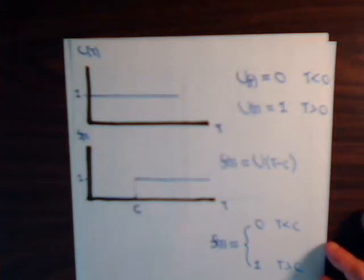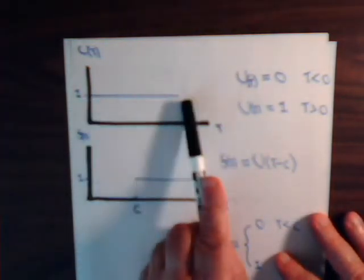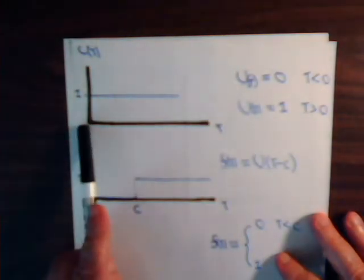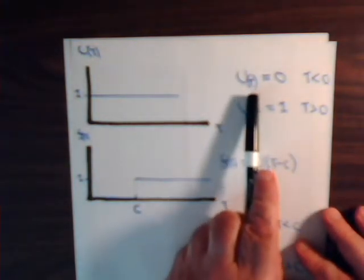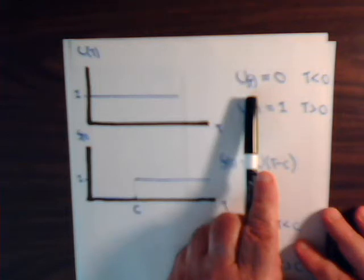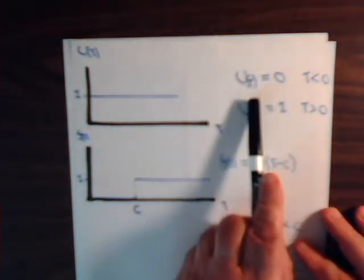So the graph of u of t would be real simple. Once we're past zero, it's equal to one. Before zero, then it's zero. So again, whatever inside of these parentheses here, if it's negative, then this is going to be a zero quantity. If whatever inside of here is greater than zero, then this is one.